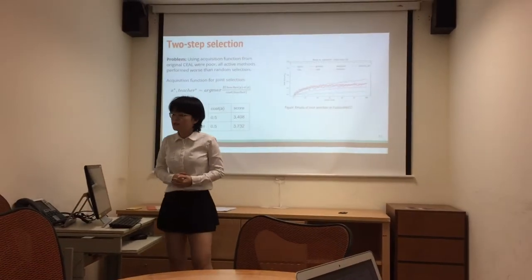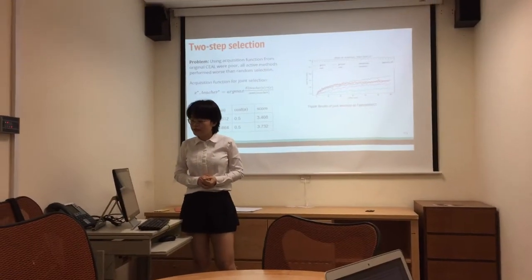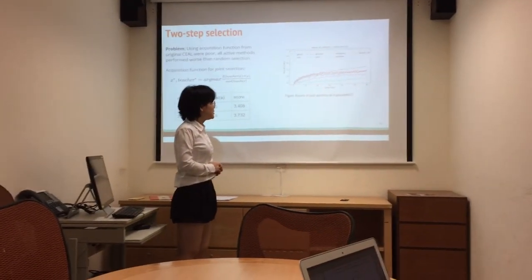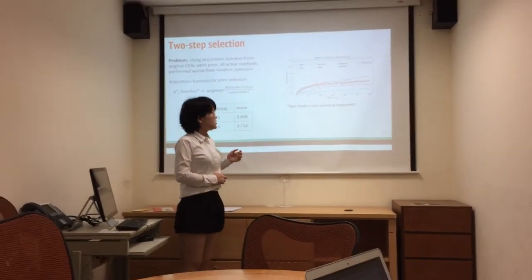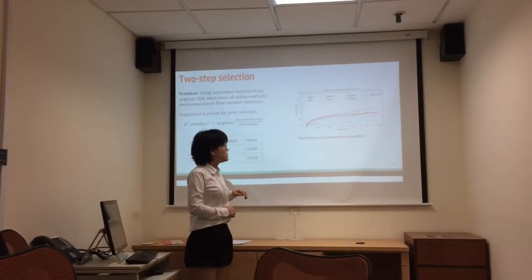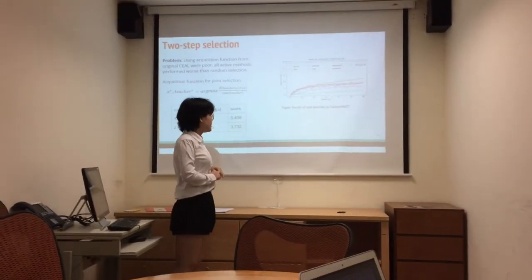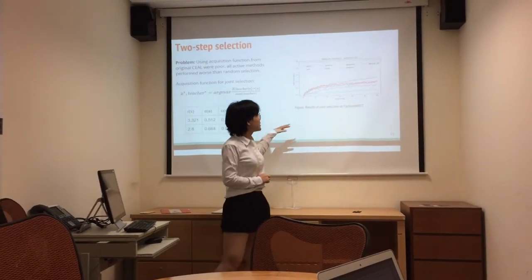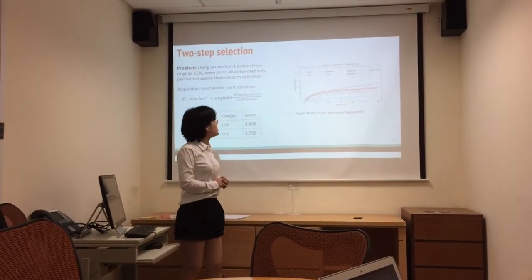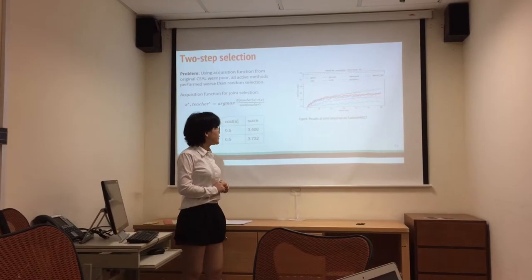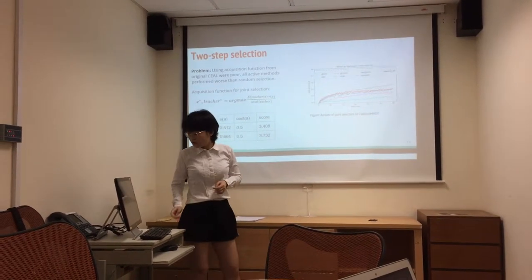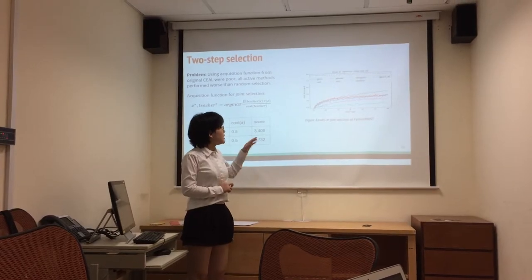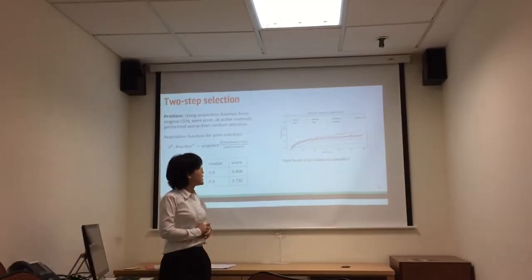When we performed the methods, we found a problem. Looking at the result on Fashion MNIST, random selection surpasses all other active learning methods, which was not expected. In the graph, the x-axis is the total cost and the y-axis is the test accuracy. The green line represents random selection, the other colorful lines are the active learning methods, and the top dashed black horizontal line represents using all true labels for the unlabeled dataset.